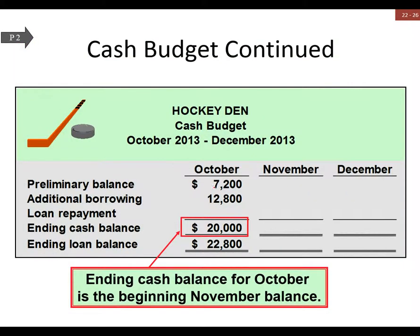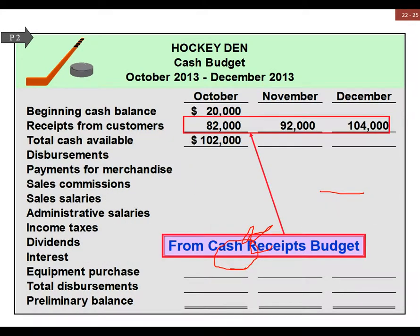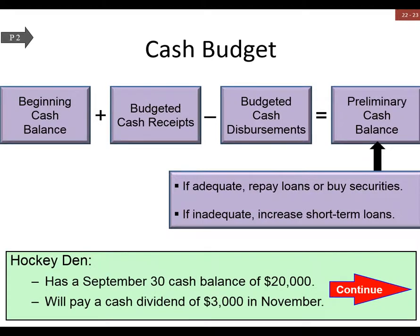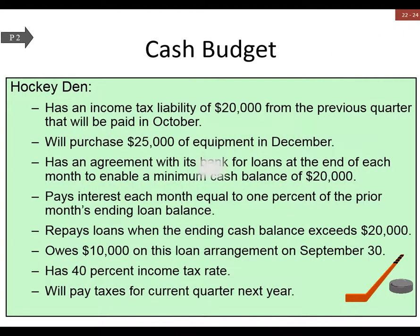This is our preliminary cash balance. Remember, this is the end of the equation from a couple slides ago — the preliminary cash balance is what we're solving for as we do beginning cash balance, plus receipts, minus disbursements.